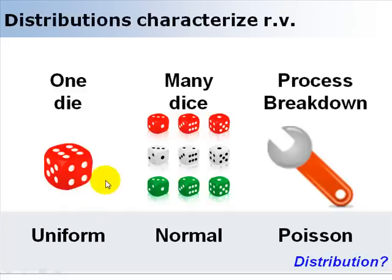If we roll several dice together and add them up, take their summation, that's a random variable too, but it's going to be characterized by a normal distribution.